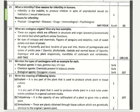The 21st question: what is infertility? Give reasons for infertility in humans. Infertility is the inability to produce children in spite of unprotected sexual intercourse. The reasons for infertility might be physical, congenital, diseases, drugs, immunological, or psychological. Any four reasons may be mentioned.